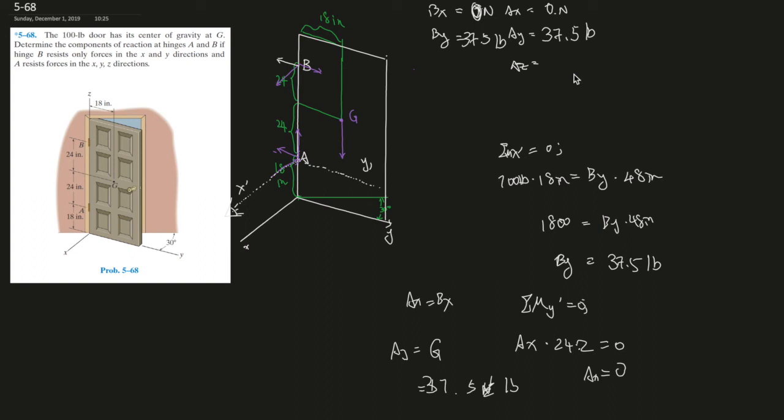So Az is counteracted only by G, right? That is 100 pounds as stated in the question. So Az should be 100 pounds.